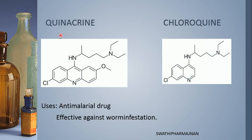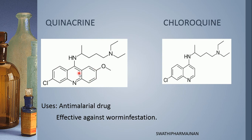The next class of anti-helminthic drugs are quinacrine and chloroquine, which are anti-malarial drugs. The prefix 'quin' indicates a quinoline ring in chloroquine, and an acridine ring in quinacrine. What is the acridine ring? Two phenyl rings with a pyridine ring fused in between — that is the structure of acridine.